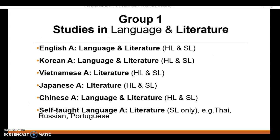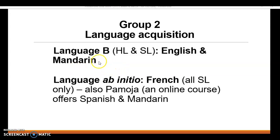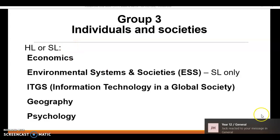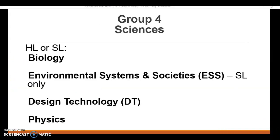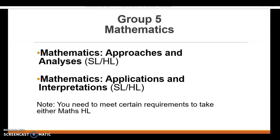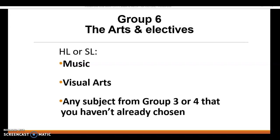These are the subjects within each group. Group one is language and literature for native or near-native speakers - at AIS we offer English, Korean, Vietnamese, Japanese, or Chinese A. If those aren't your first languages, you could also do self-taught with an online tutor. Group two has English and Mandarin as language B subjects, and ab initio options in French, Spanish, or Mandarin. Group three is individuals and society - humanities. Group four is the sciences. Group five is mathematics, and group six has music and visual arts, or you can choose any group three or four subject not already chosen.